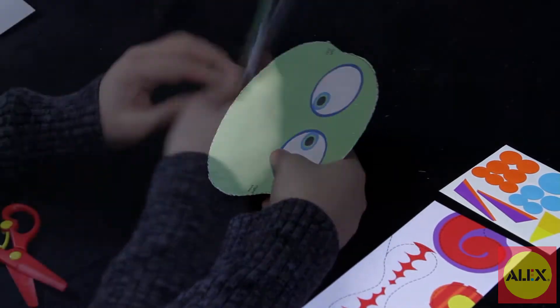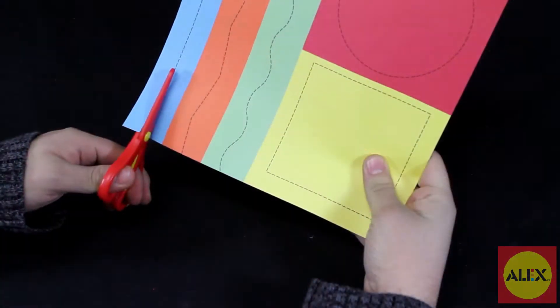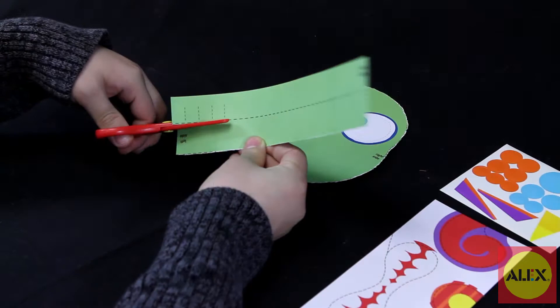Inside Ready, Set, Cut you get the Easy Squeeze Scissors, 8 Illustrated Dotted Line Activities, a practice sheet and over 300 stickers to decorate your shapes.